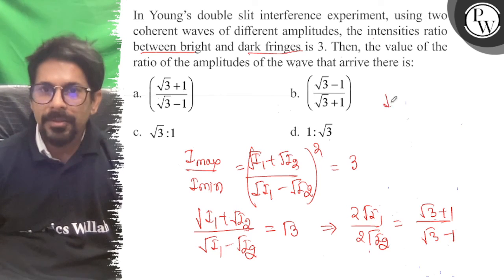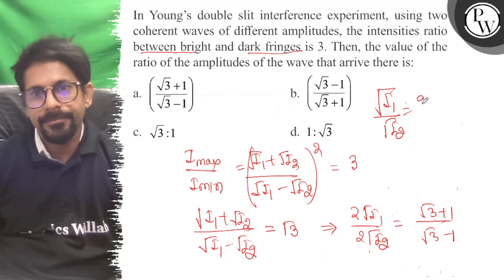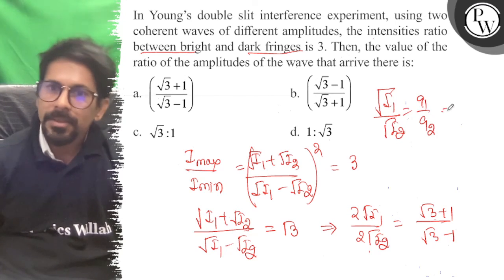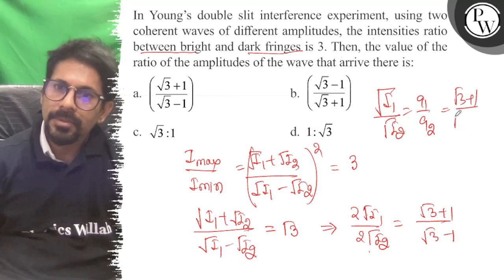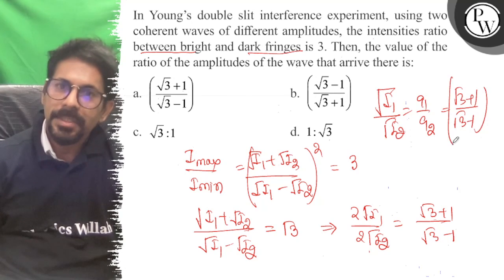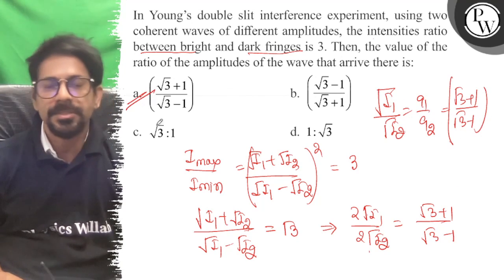So root I1 upon root I2 is the same as your amplitude ratio. That is (root 3 plus 1) upon (root 3 minus 1). So this is the answer. Here, option A is correct. All the best!